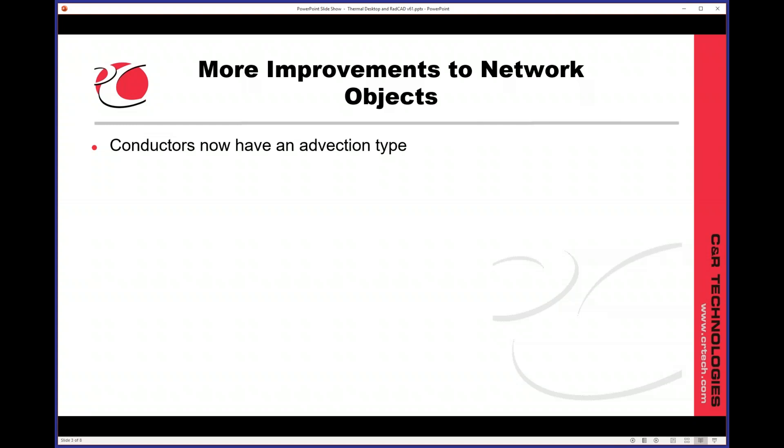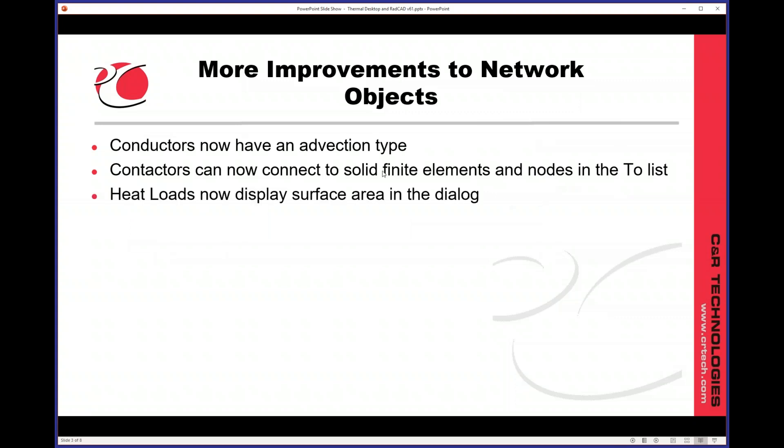More network objects that have had some improvements. Conductors now have an advection option. Contactors can now connect to solid finite elements and to nodes in the to list. That kind of helps, especially the nodes, you can now connect a contactor to, say, a boundary condition. But the from objects with the contactors will always be just actual objects. So surfaces, solids, pipes, things along those lines.